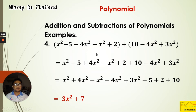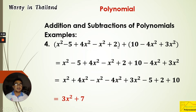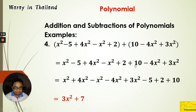Example 4: We are adding two polynomials. The first polynomial is x² − 5 + 4x² − x² + 2, and the second is 10 − 4x² + 3x². Since this is addition, when we remove the parentheses there are no sign changes in the second polynomial. We simply copy both polynomials: the first as is, then 10, minus 4x², plus 3x².